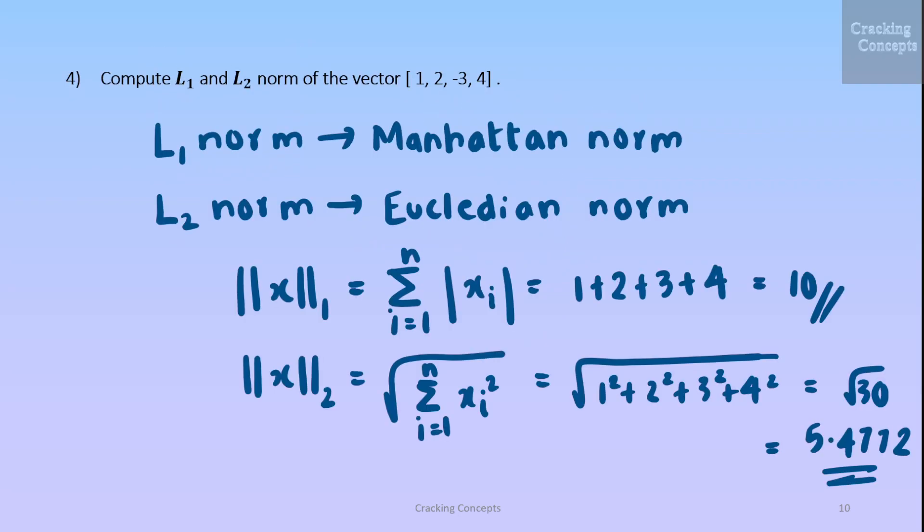The fourth question is to find out the L1 and L2 norm of the given vector. Now L1 norm is the Manhattan norm and L2 norm is the Euclidean norm. To find Manhattan norm we'll take the summation of absolute value of all the elements in the vector. That is 1 plus 2 plus 3 plus 4 which will give us 10. In order to find the Euclidean norm we'll take the root of summation of square of each elements in the vector. So that is root of 1 square plus 2 square plus 3 square plus 4 square which is root 30. The value will be 5.4772.